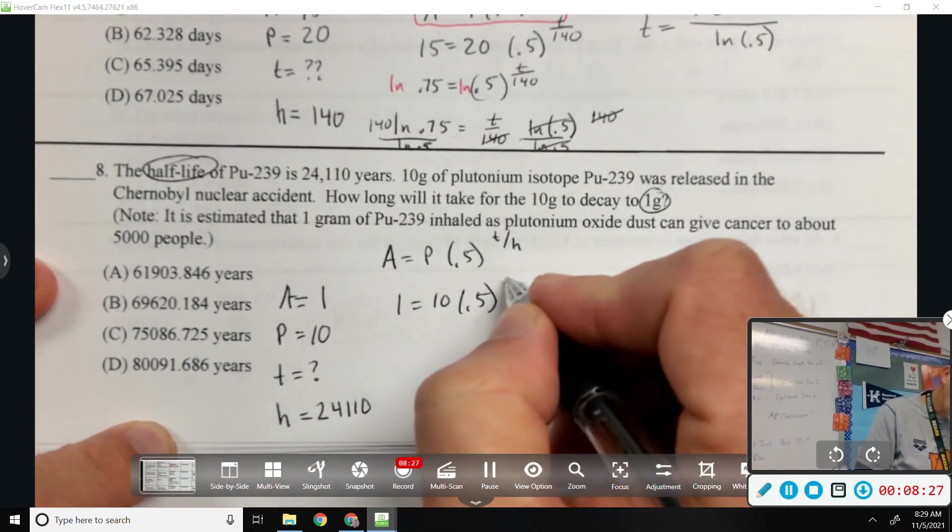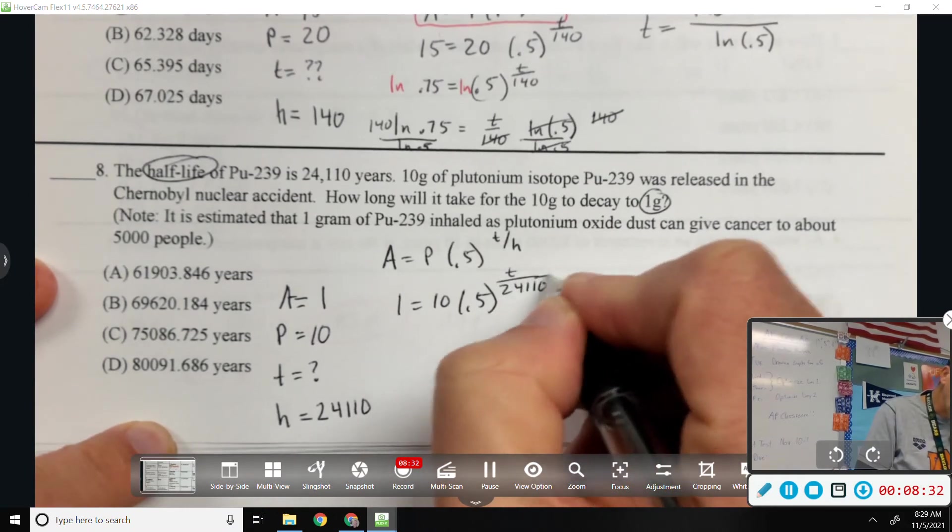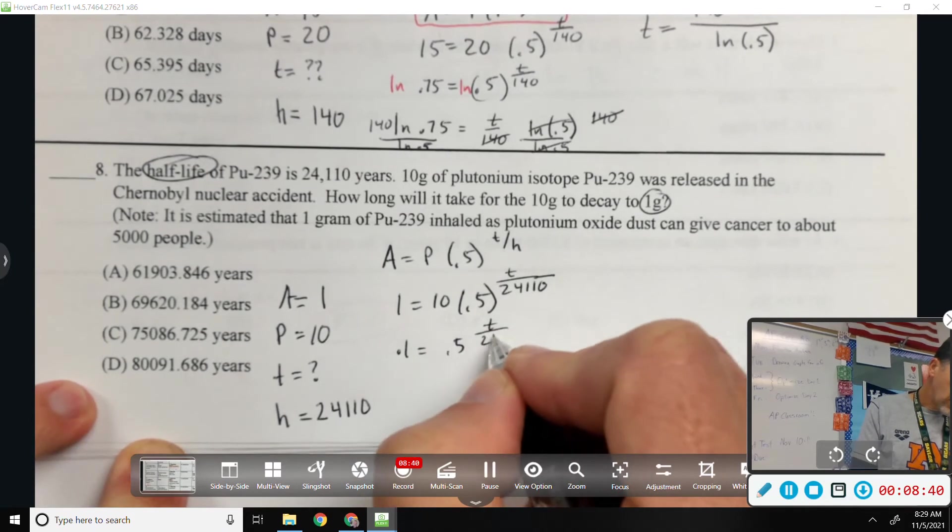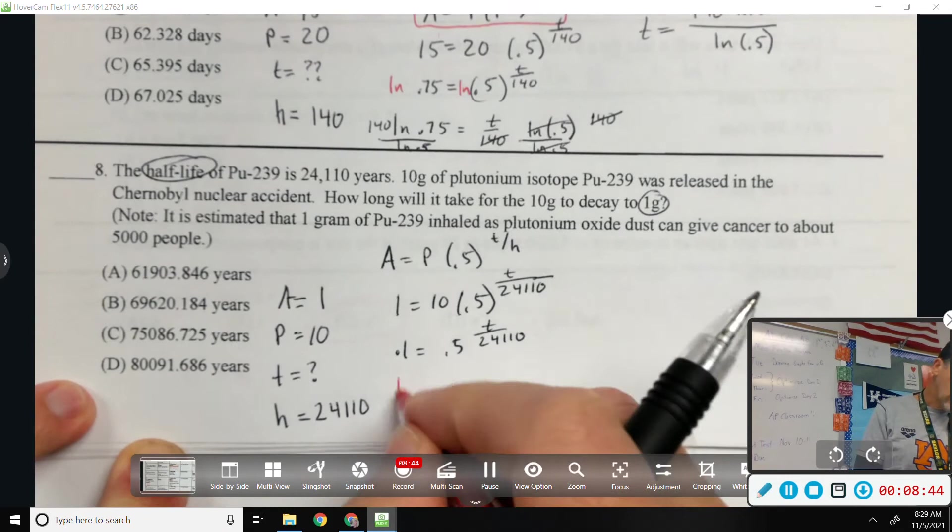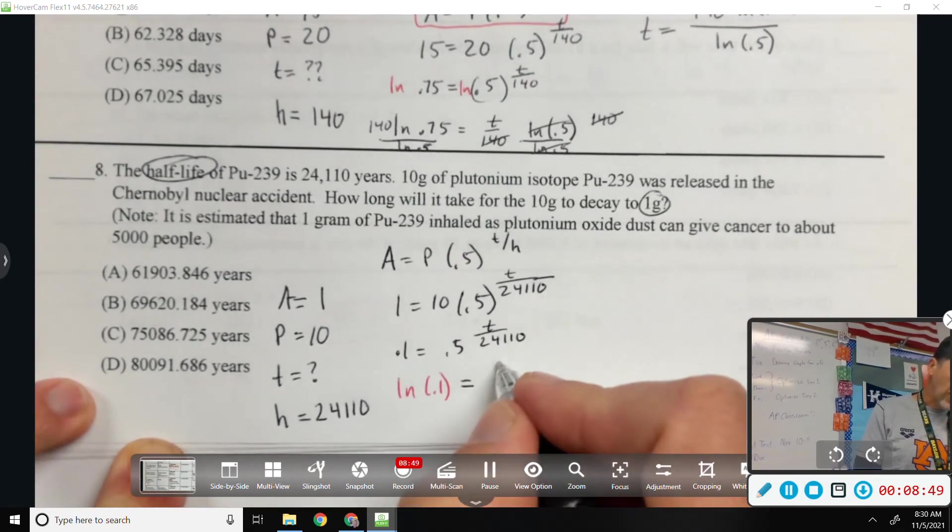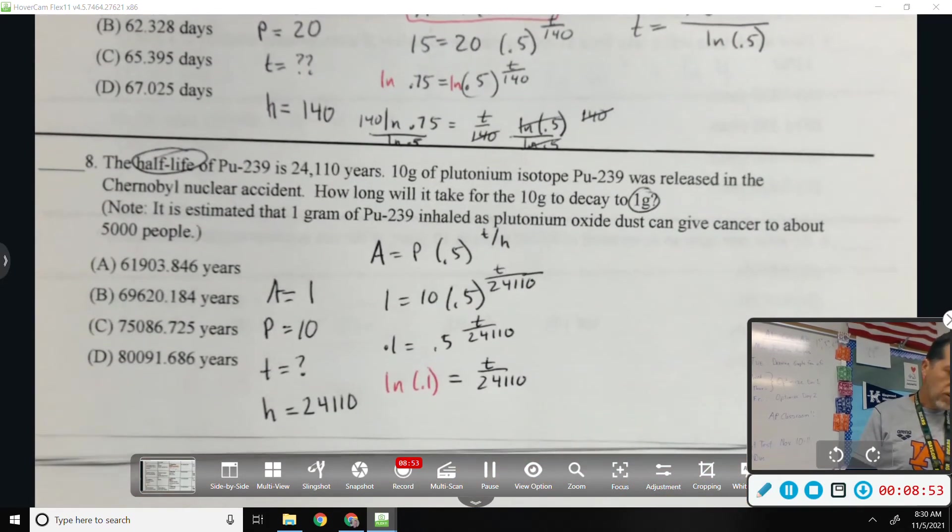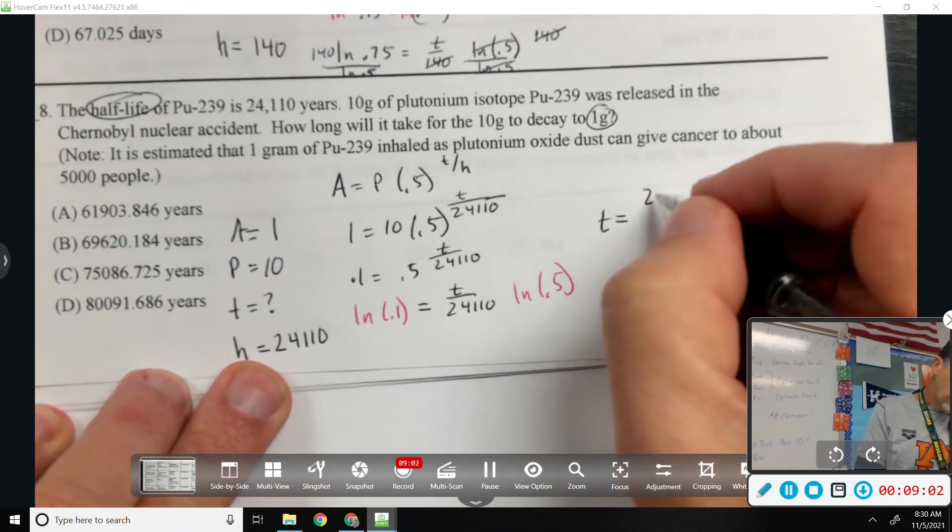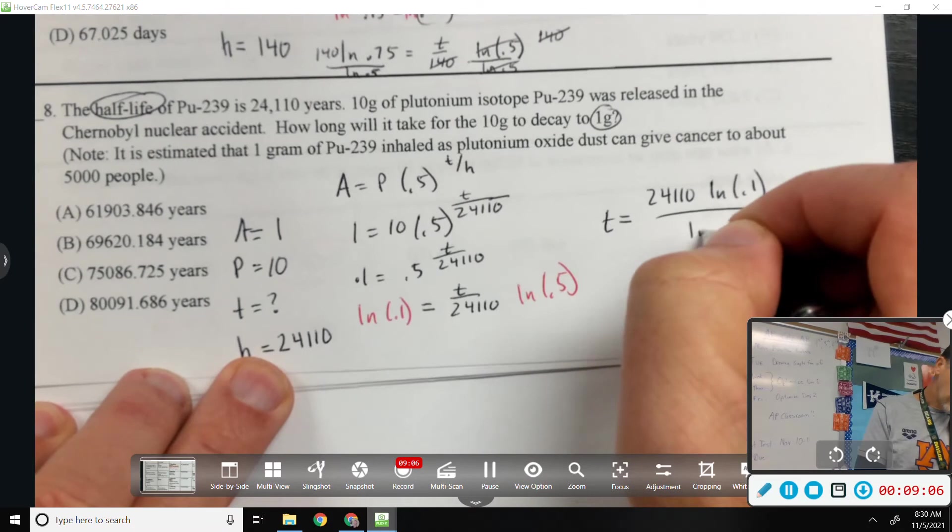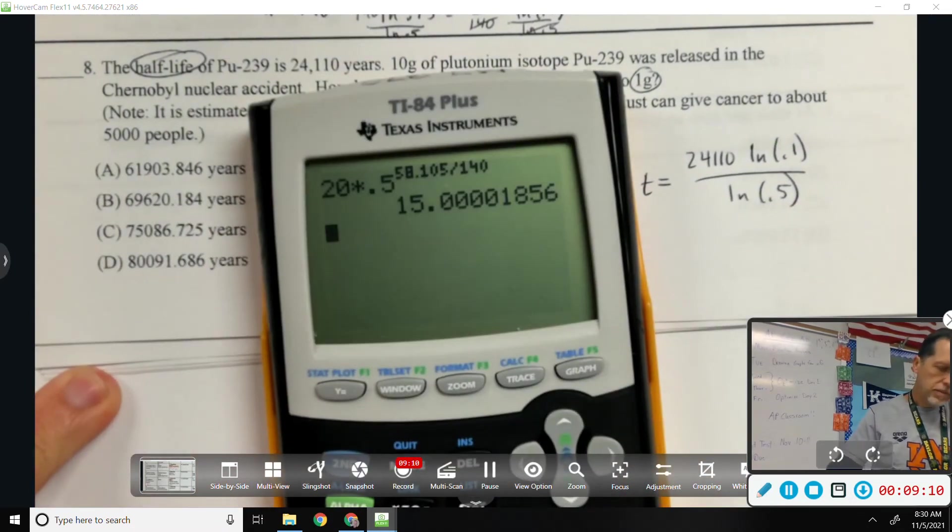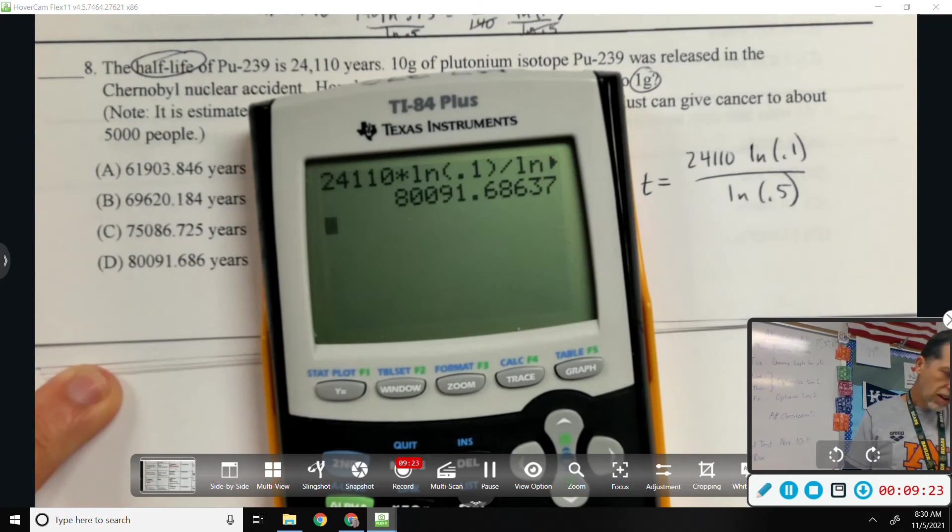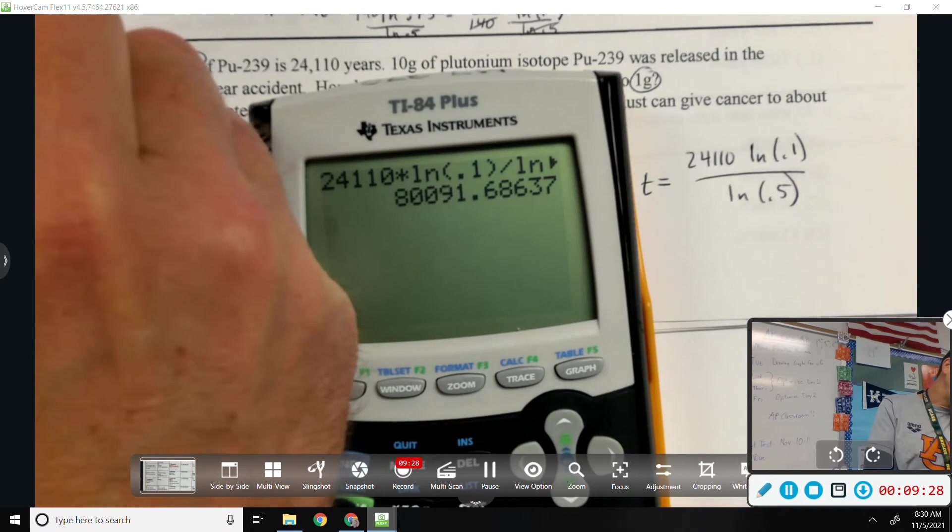Again, you can guess and check. I'm going to do it the real way since I'm the math teacher, but yes, you can guess and check. Divide both sides by 10. And then natural log both sides. Depending on which answer it is, I might beat some of you. You can guess and checkers. Because now I can go to the calculator. I'll even go one more step. 24,110 natural log 0.1 divided by natural log 0.5. 80,091. That probably was to my benefit because their correct answer wasn't until choice D. So, guessing checkers would be... Actually, I started on choice C.